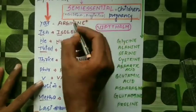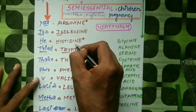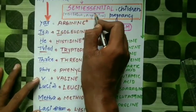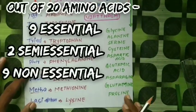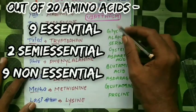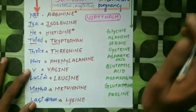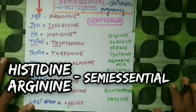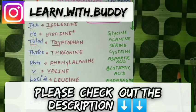Generally, histidine and arginine are placed in essential amino acids, but they are also kept in semi-essential. Semi-essential amino acids are generally required in children and during pregnancy. The rest of the 20 amino acids found in proteins — if these are essential, then the rest become non-essential. And histidine and arginine are kept in semi-essential.